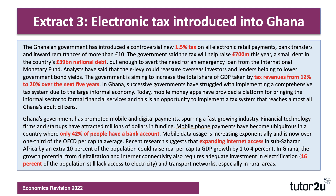Quick reminder of Extract 3, which we went through a couple of videos ago. The Ghanaian government has brought in a new 1.5% tax. That percentage sounds quite low, but of course it's on every electronic retail payment — in shops, bank transfers between people, and inward remittances of more than £10. The government hopes the tax will raise £700 million, although that's relatively small compared to the £39 billion debt, but the aim is to raise tax revenue and help the government fund new borrowing.